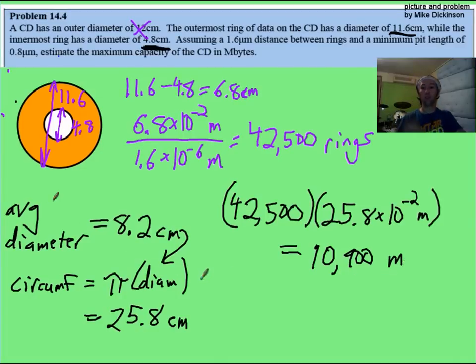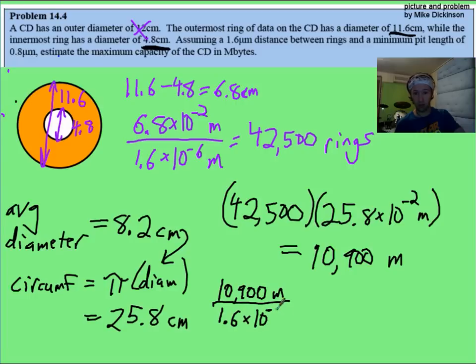Now, with on that almost 11 kilometers, how many bits are there? So let's start with 10,900 meters. In the previous slide, we said that one bit was 1.6. So we're going to get 1.6 times 10 to the negative 6, because it's micrometers, meters per bit.